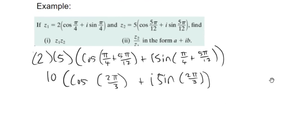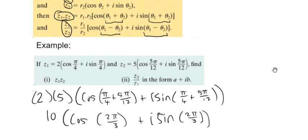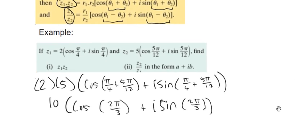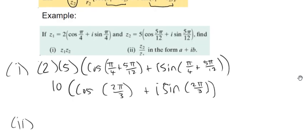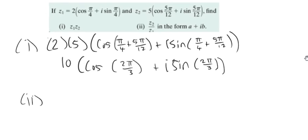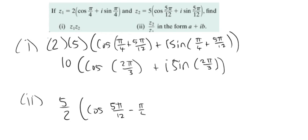Now the second part is where we're dividing them — pretty much the opposite. We divide the two R's and subtract the two angles. This is part 2, and we're doing Z2 divided by Z1 — just be careful about the order. So it'll be 5 divided by 2 outside, and then cos of — the angle for Z2 is 5 pi over 12, and we're going to subtract pi over 4, because we're subtracting Z1's angle.